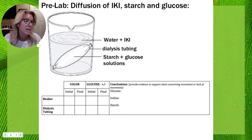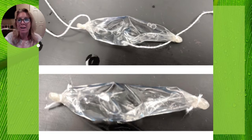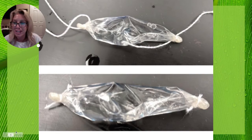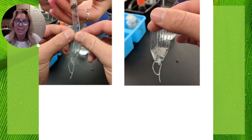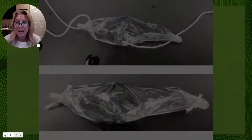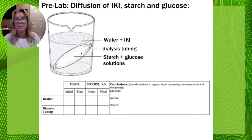Dialysis tubing feels like a stiff plastic bag, but when you put it in water it loosens up. It's open on either end, so if you want to make it like a pretend cell you have to tie off either end with string and cut the ends off. You use a syringe to add whatever solution you want to put in there, get all the excess air out, and tie off the other end so it can expand. We'll be doing this pre-lab to get to know our solutions and the colors they might change, then using the dialysis tubing as a model to see if starch, glucose, water, or iodine can move in or out.